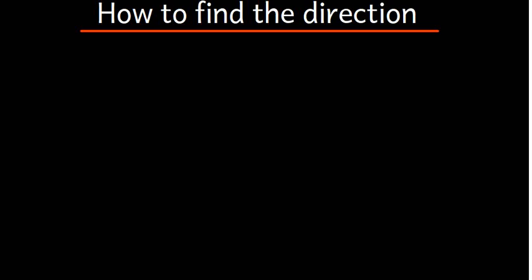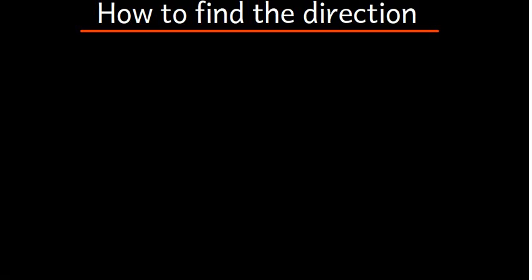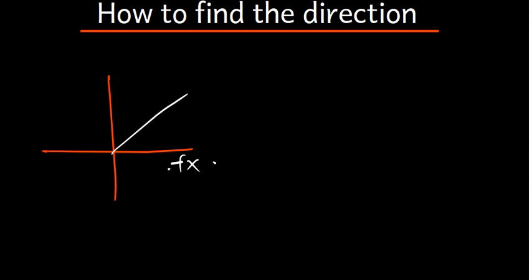In this video, we want to know how we can find the direction of a vector. In the previous video, we talked about how to find the angle. All angles are supposed to come from the positive x-axis. If I have a vector at 20 degrees, I measure the angle from the positive x-axis all the way to that line, so I use 20 to resolve it.